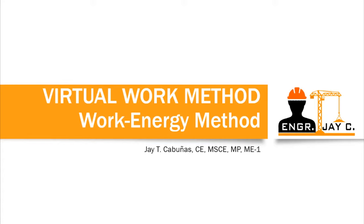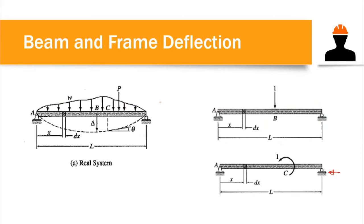What is the procedure for analysis using the virtual work method in determining deflection and slope? You start with a real system, which is comprised of the actual load and supports of the beam. In the virtual work method, you create a virtual system — an imaginary system. For example, if you wish to determine the deflection at point B, the equivalent virtual system has a one-unit concentrated load placed at that point.